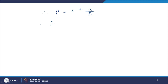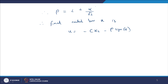Therefore the final control law U is given by U = -cx₂ - ρ·sgn(σ), where ρ = L + α/√2. L is a constant and α is a constant, so ρ becomes a constant. The first term of ρ is responsible for handling the disturbance and the second term is responsible for finite time convergence.